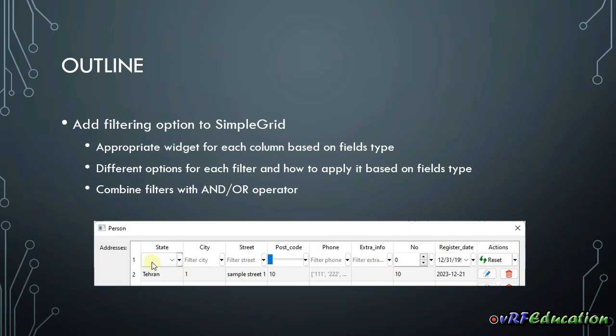I go through the object fields or the columns of a data grid and create an appropriate widget based on the object types and also the widget that you mentioned in your annotation for that class. These fields are added to the first row of each simple grid widget page. And beside each widget, I add a down arrow option — if you click that, it enables you to choose how to act on data with this filter.